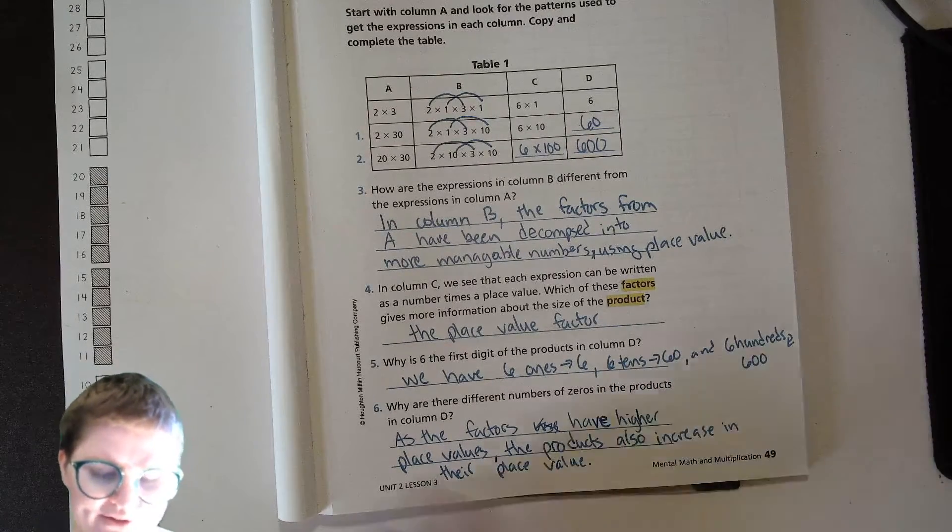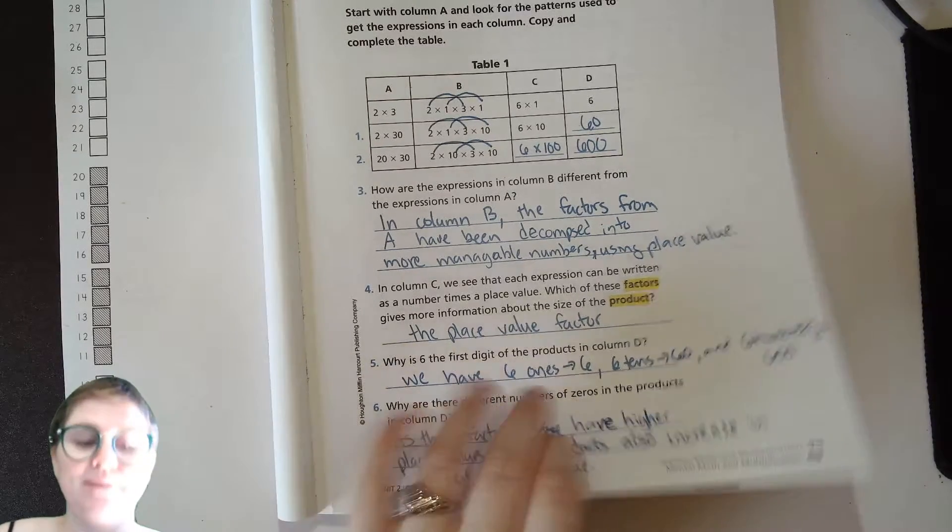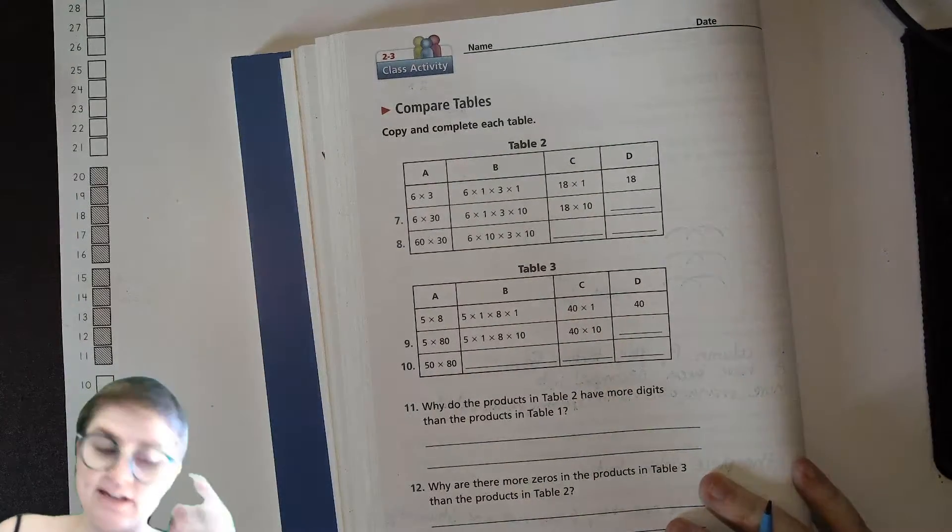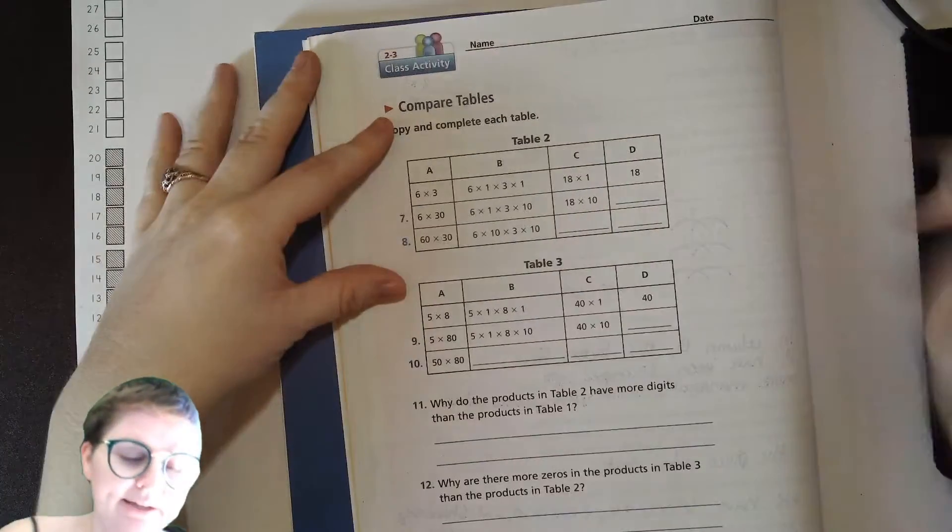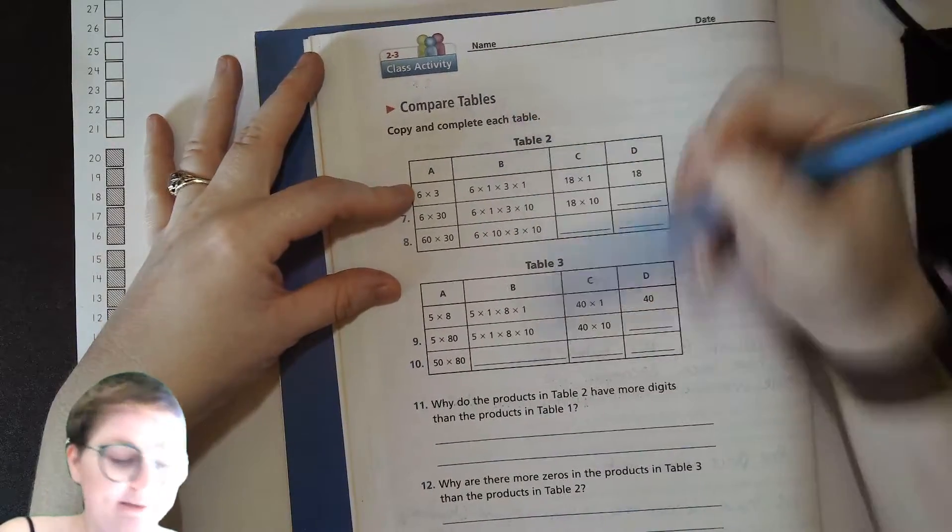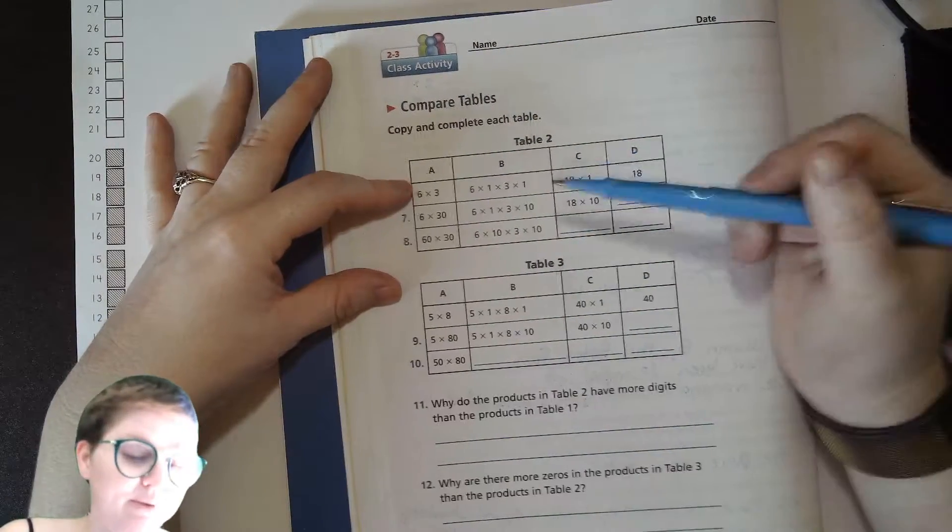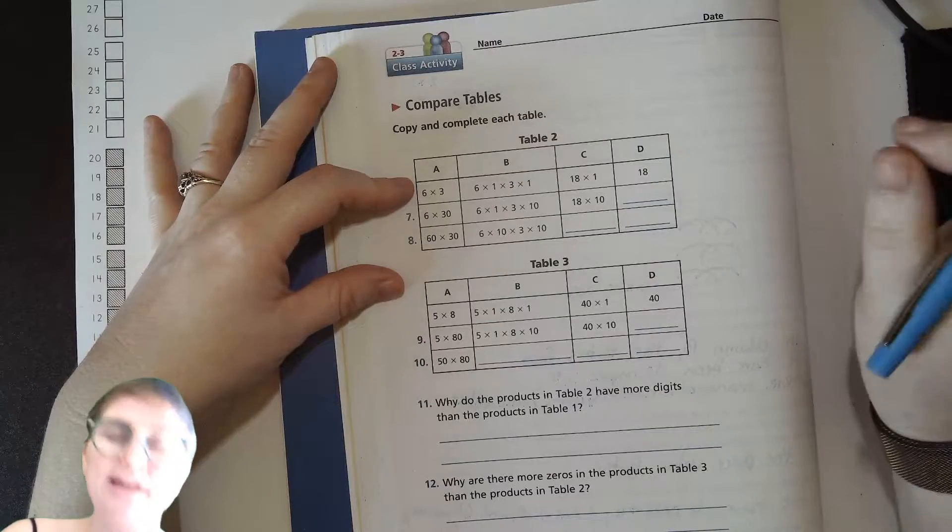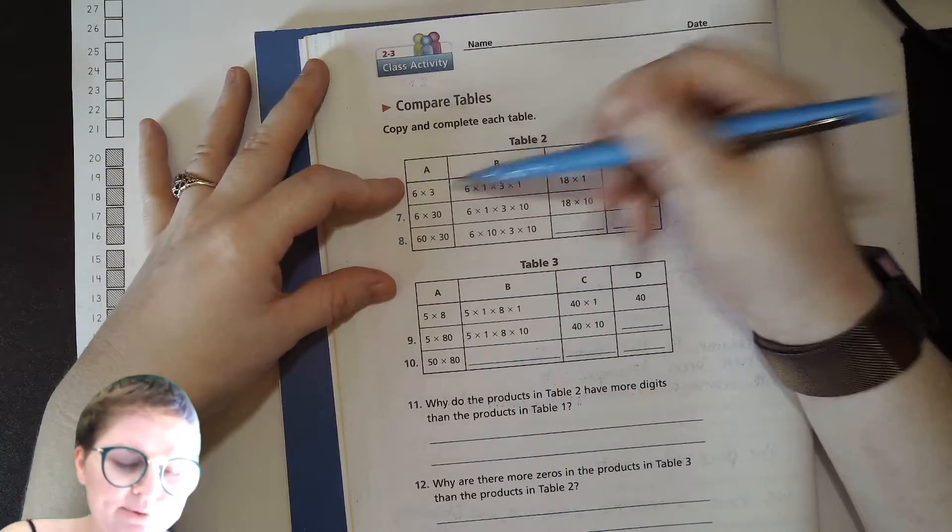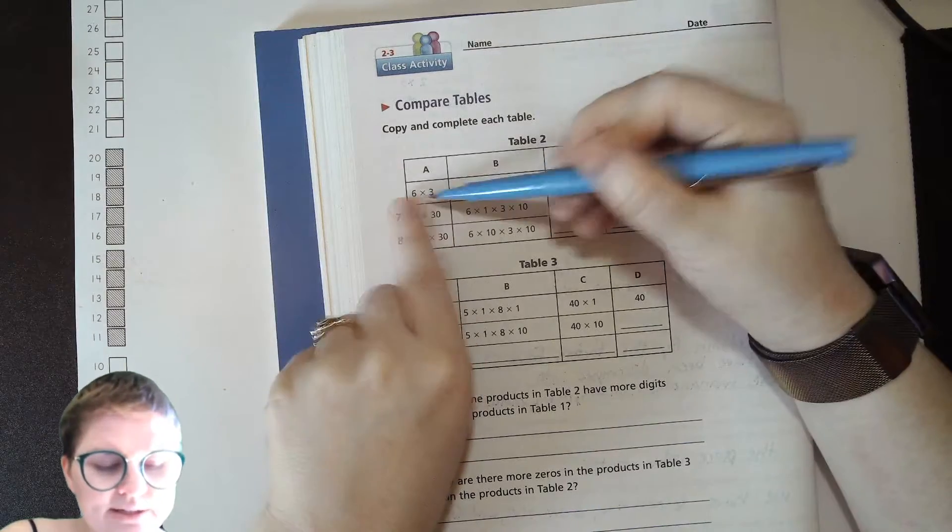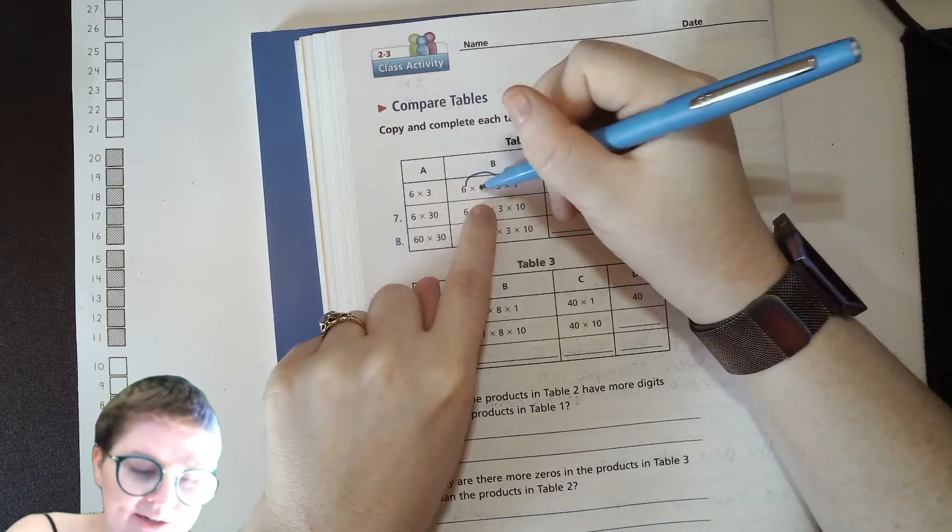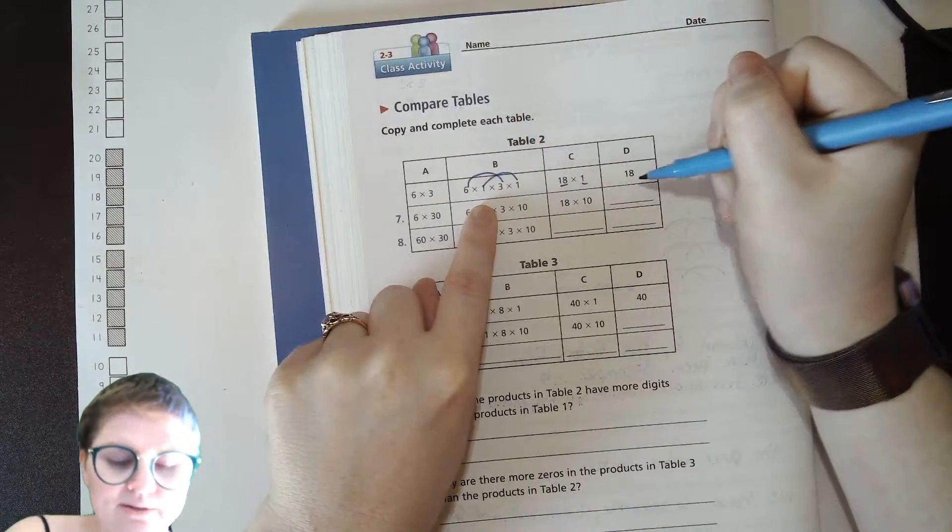Make sure you can see that as the factors have higher place values, the products also increase in their place value. All right, now if you have a think central assignment, it's very likely that you will see tables just like this. So make sure you're thinking about what we're doing here. We're completing the tables just like we did on the previous one. I want you to give it a shot. So pause, give it a try and then hit play when you're ready. If you feel comfortable, here we go. Six times three, so six times one is six, three times one is three, six times three is eighteen, and one times one is one, so our answer is eighteen.